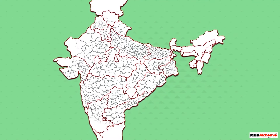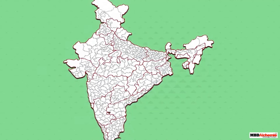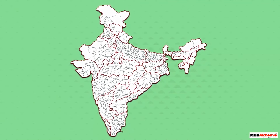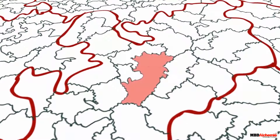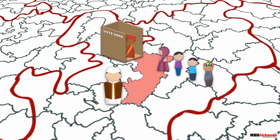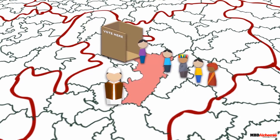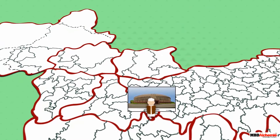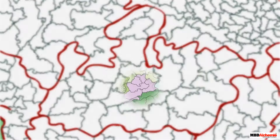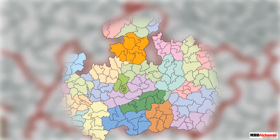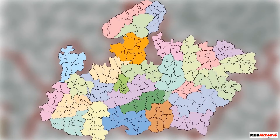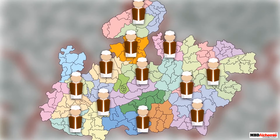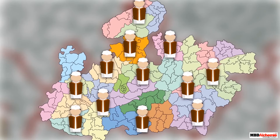For the general elections, our country has been divided into 543 territorial divisions known as constituencies. People residing in a constituency elect one person from among different candidates who represent them in the Lok Sabha, which is the lower house of the parliament. For assembly elections, the states are further divided into smaller constituencies and a representative is elected from each one of them to the respective state legislative assembly.